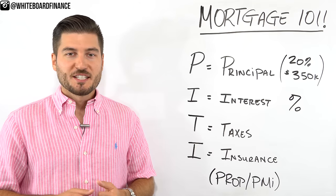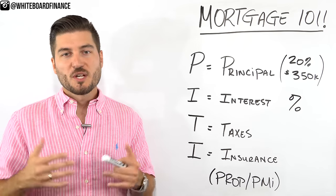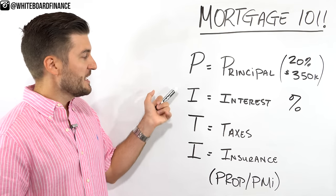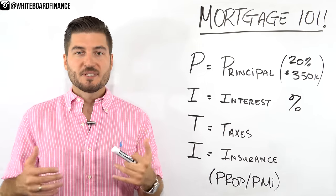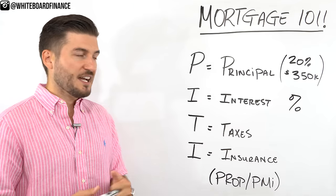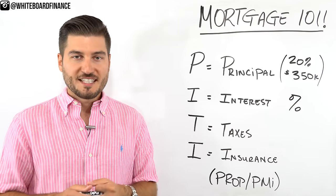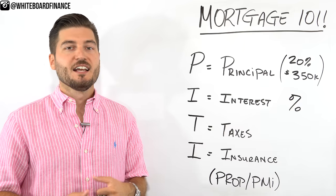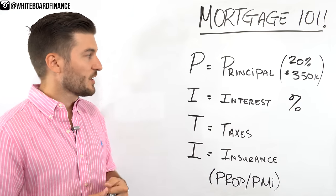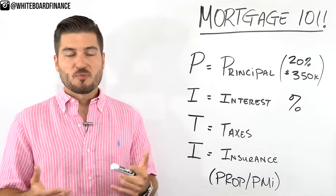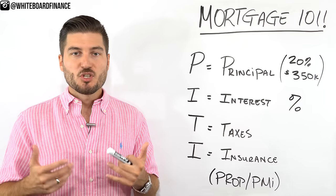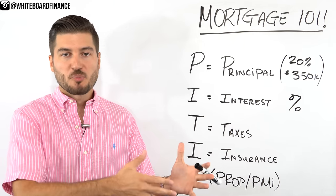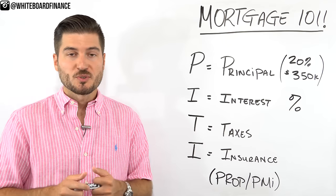Let's run through the four factors that go into a mortgage payment. If you understand the acronym PITI, that stands for Principal, Interest, Taxes, and Insurance. If you're a real estate investor, you know these four letters like the back of your hand. P stands for Principal — this is simply the amount of money that you owe the bank for lending you the funds to purchase the house you're moving into.